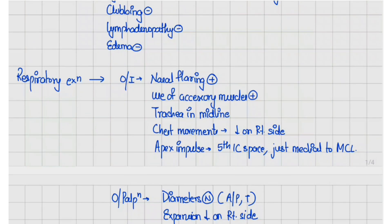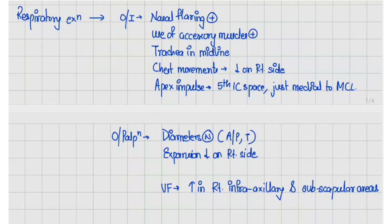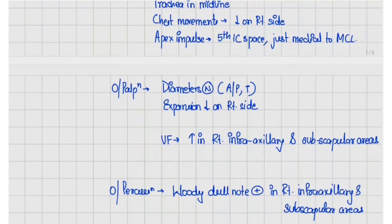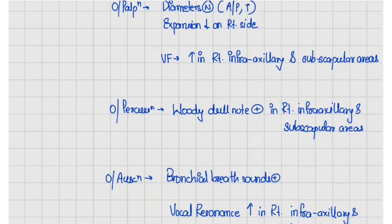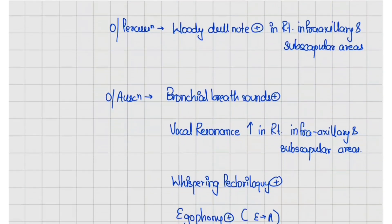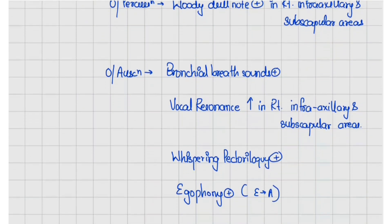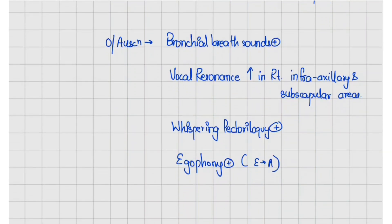Chest movements are decreased on the right side. The apex impulse is at the fifth intercostal space just medial to the midclavicular line. On palpation, trachea is in midline, diameters are normal, expansion is decreased on the right side, and vocal fremitus is increased in the right infraaxillary and subscapular areas. There is a woody dull note on percussion in those areas. On auscultation, bronchial breath sounds are present with increased vocal resonance, positive whispering pectoriloquy, and egophony in the right infraaxillary and subscapular areas.